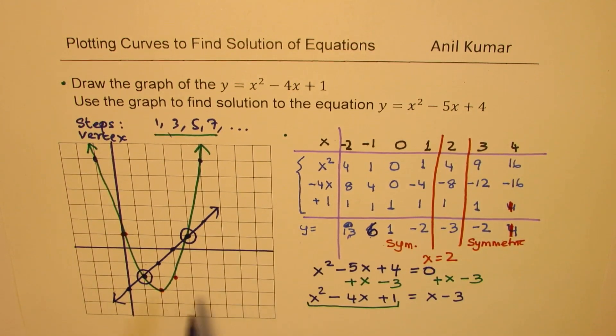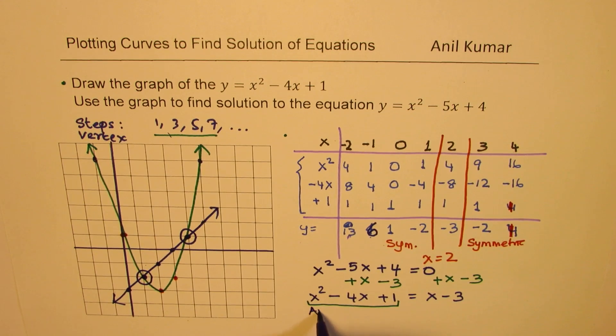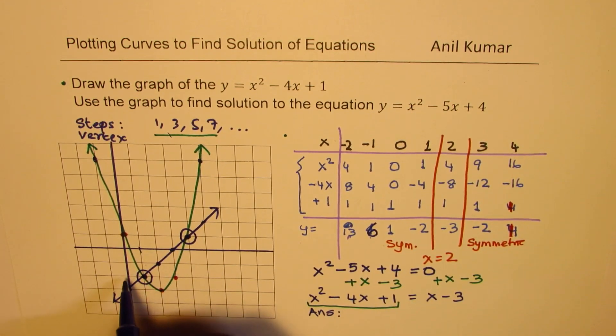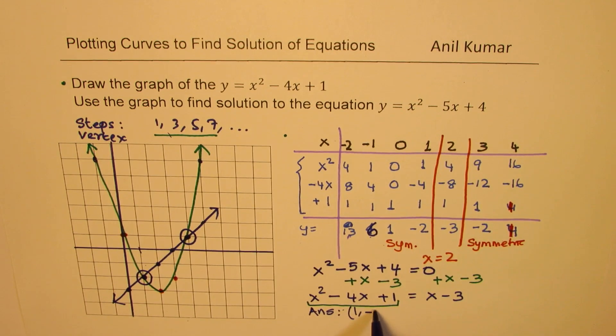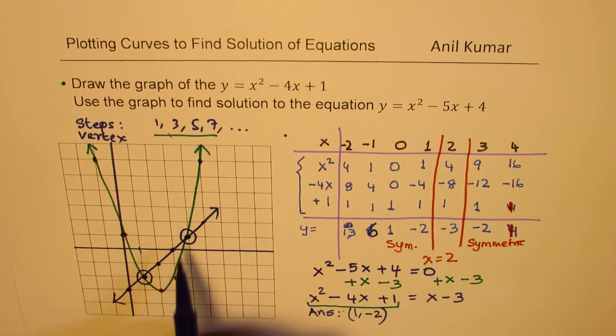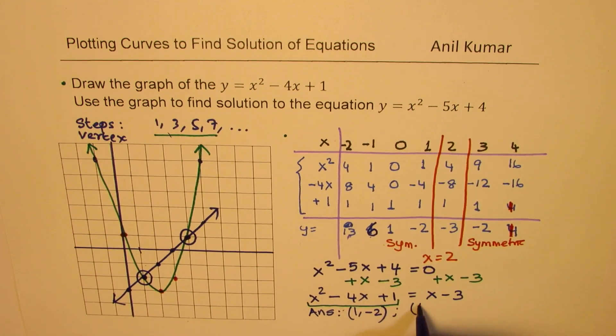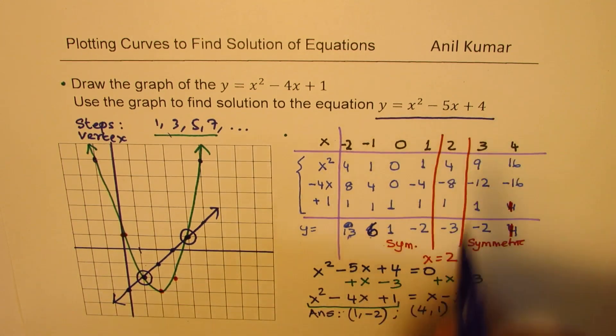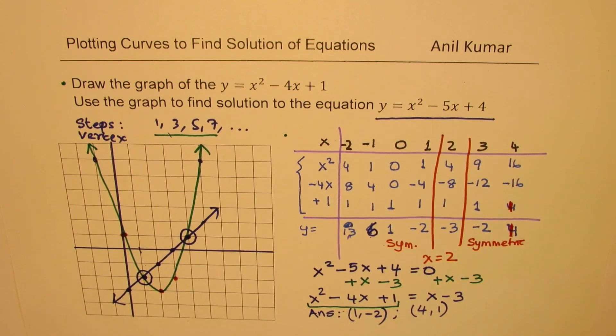So we can write down our answer. And the answer here is, this is 1, minus 2. So we get 1, minus 2. And the second point is at 1, 2, 3, 4, 1. So the second one is 4, 1. So these are the two points which give us the solution for the second equation, which is x squared minus 5x plus 4.